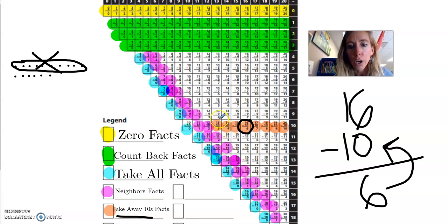14 minus 10 is four. 13 minus 10 is three. 18 minus 10, eight. Right? It's so awesome. Take away 10.